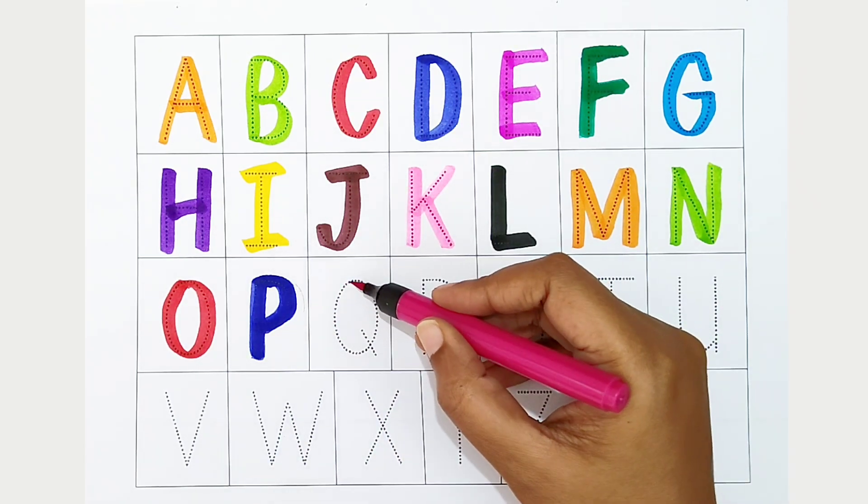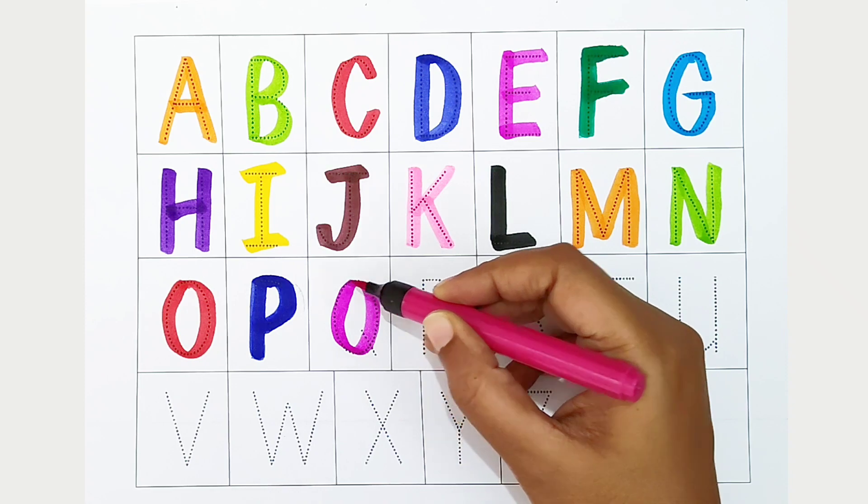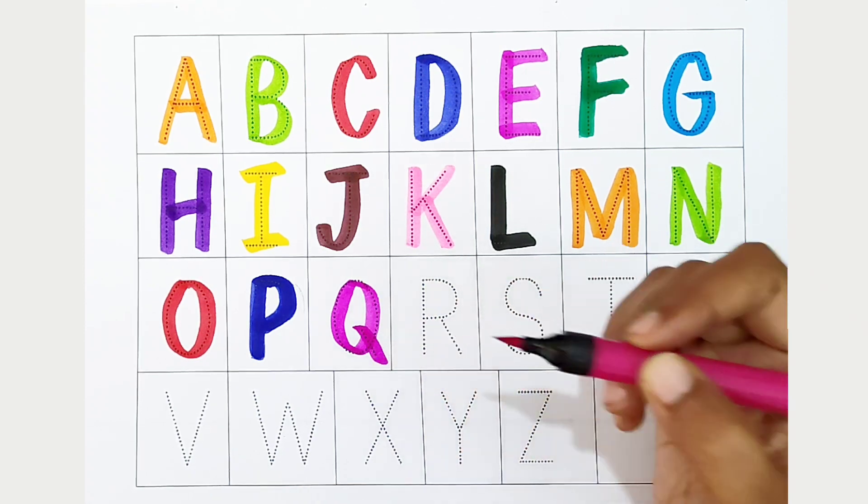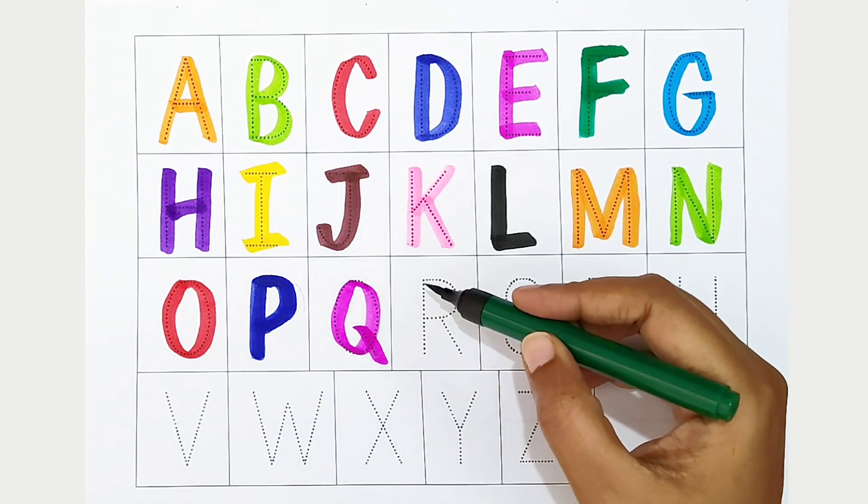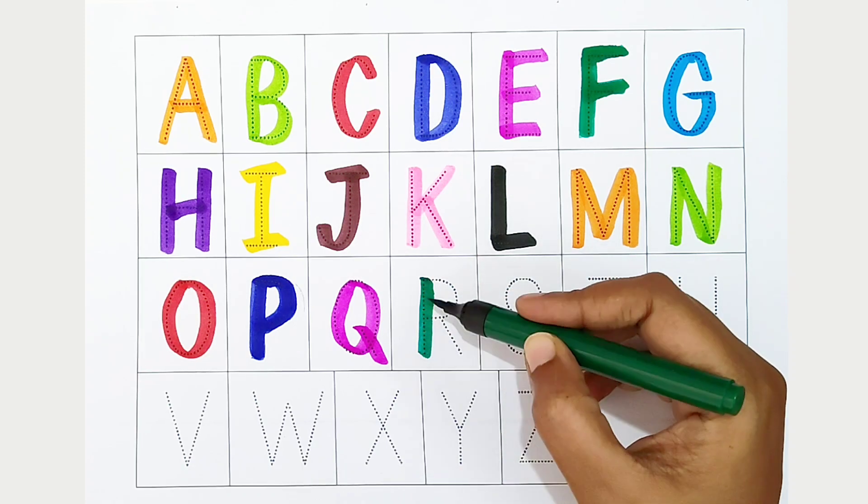Q, dark pink color, Q is for queen. R, dark green color, R is for rabbit.